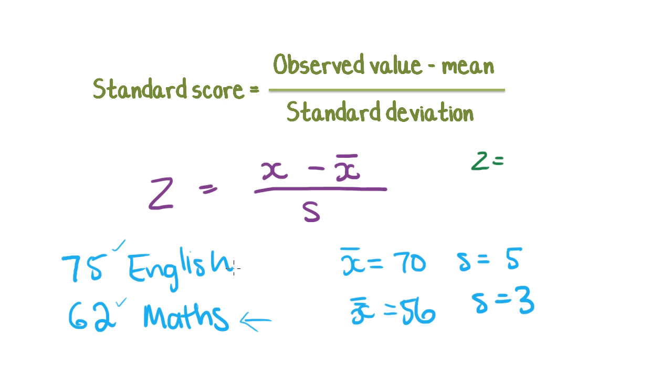So we're trying to find z. For English, our z-value is the observed value, which is 75, what we actually got, minus the mean, which is 70, divided by the standard deviation, which in this case is 5. So if you work that out, you end up with 5 over 5, which is 1. So you have a standard z-score of 1, which means you're exactly one standard deviation above the mean.